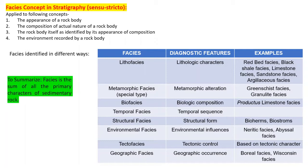The facies concept applies to the appearance of a rock body, the composition or actual nature of a rock body, the rock body itself as identified by its appearance and composition, and the environment recorded by a rock body. To summarize, facies is the sum of all the primary characteristics of sedimentary rocks — and you can include any number of characters which you consider primary.